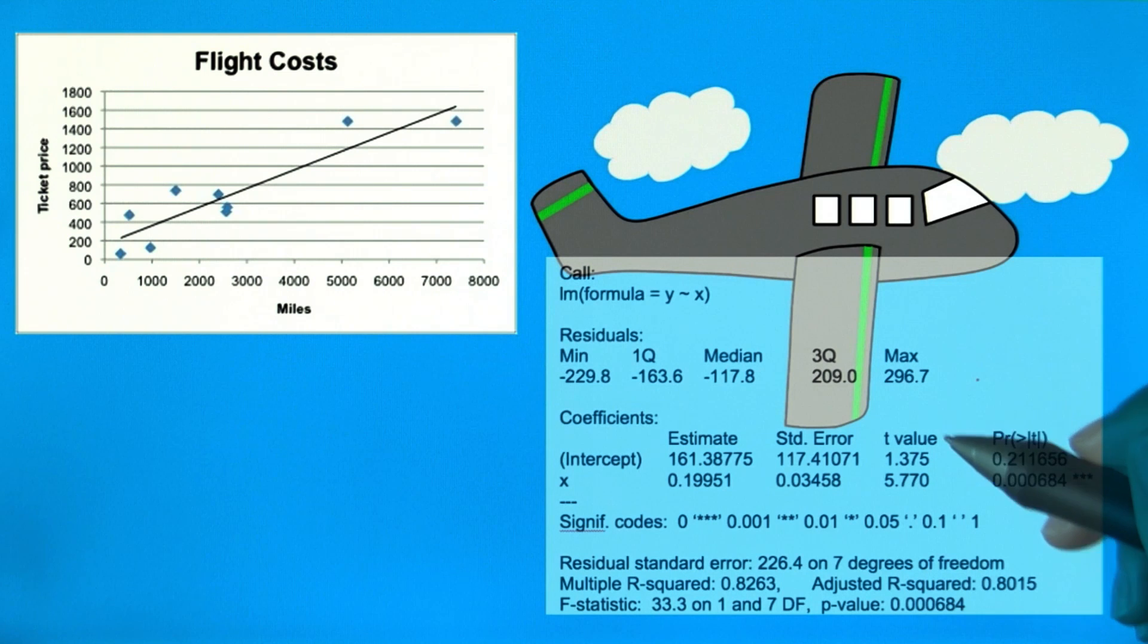Usually you'll use software to do any type of hypothesis test, whether it's on a sample mean, two sample means, the correlation coefficient, the slope, or whatever. The important thing is that you understand the meaning of the software output.